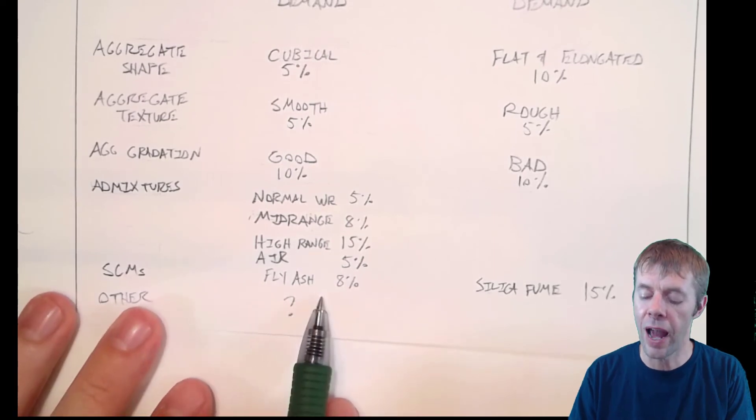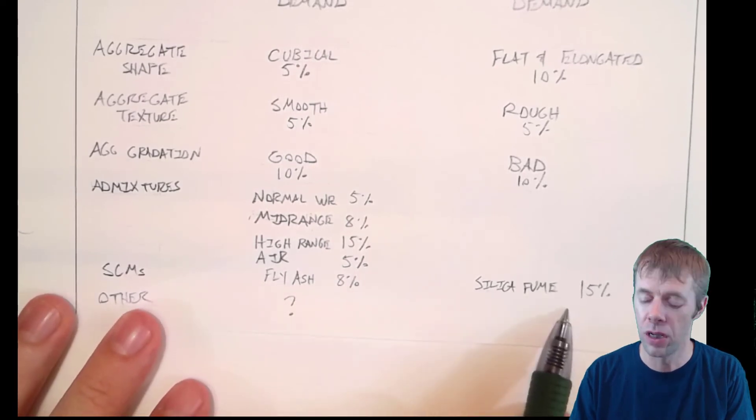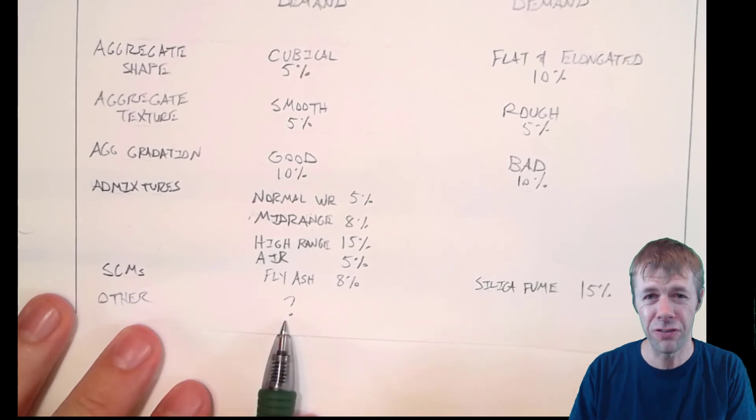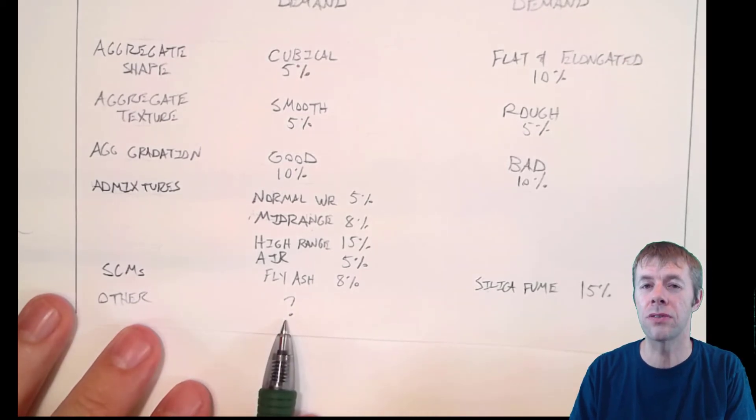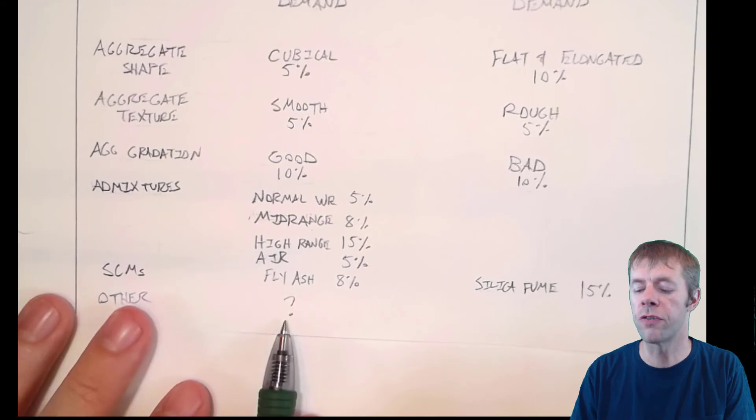So will SCMs like fly ash. But silica fume will actually make it worse. And then there's other stuff. There's all kinds of things that can impact your water demand of concrete. That's why this is kind of hard to get right. That's why you got to figure it out by trial and error. Figure out for yourself, for your materials.